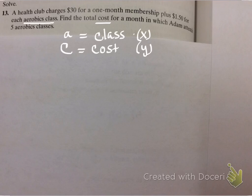Zach, what do you think it is? The C of A equals 30A. The C of A equals 30A plus 150A. Okay, are you sure? $30 for one month membership plus 150A for each aerobics class. 150A plus 30A. Okay, so we can do 30 plus 150A. Because the aerobics classes are changing. Okay? Not 30 times aerobics classes.